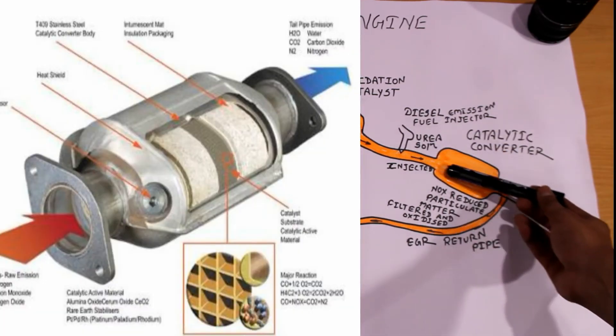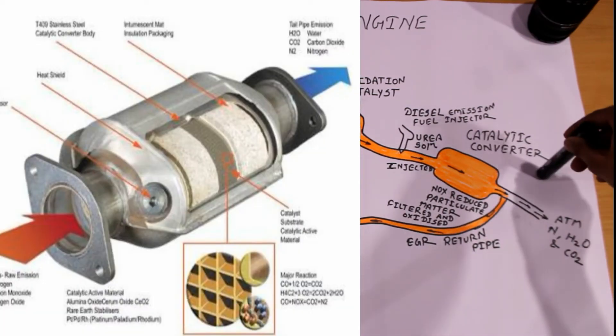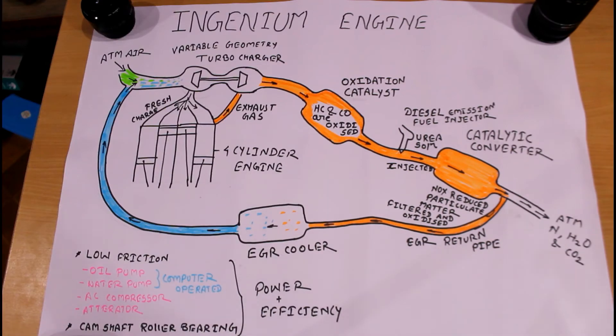After that, these gases go to the catalytic converter. In the catalytic converter, hydrocarbons, carbon monoxide, and NOx are absorbed somewhat. Finally we get less hazardous gases which are almost clean, and then they are released into the atmosphere. Finally we have nitrogen, water, and carbon dioxide.